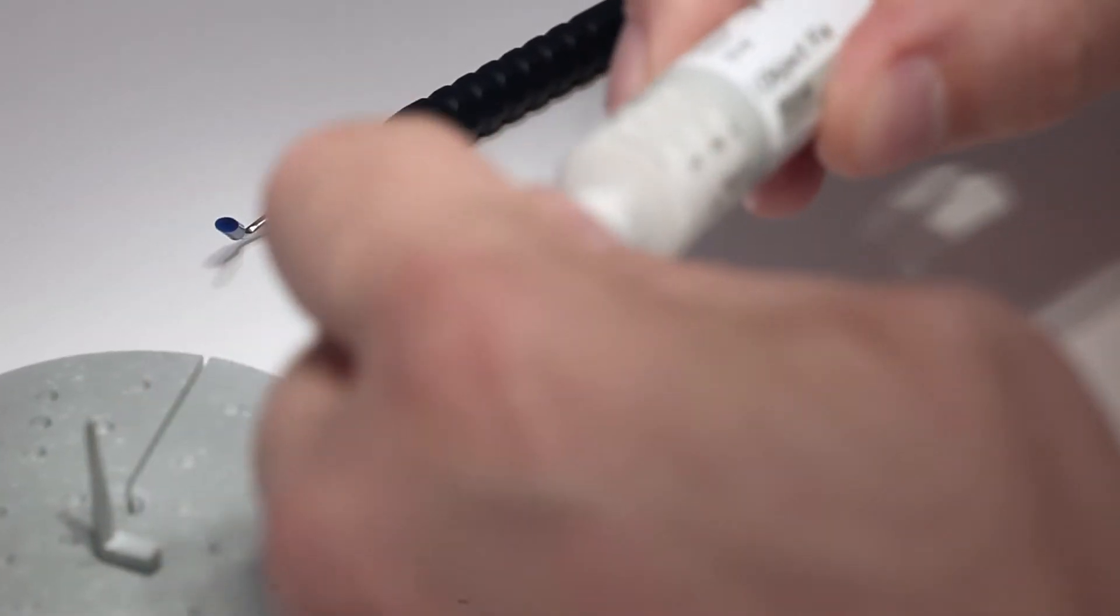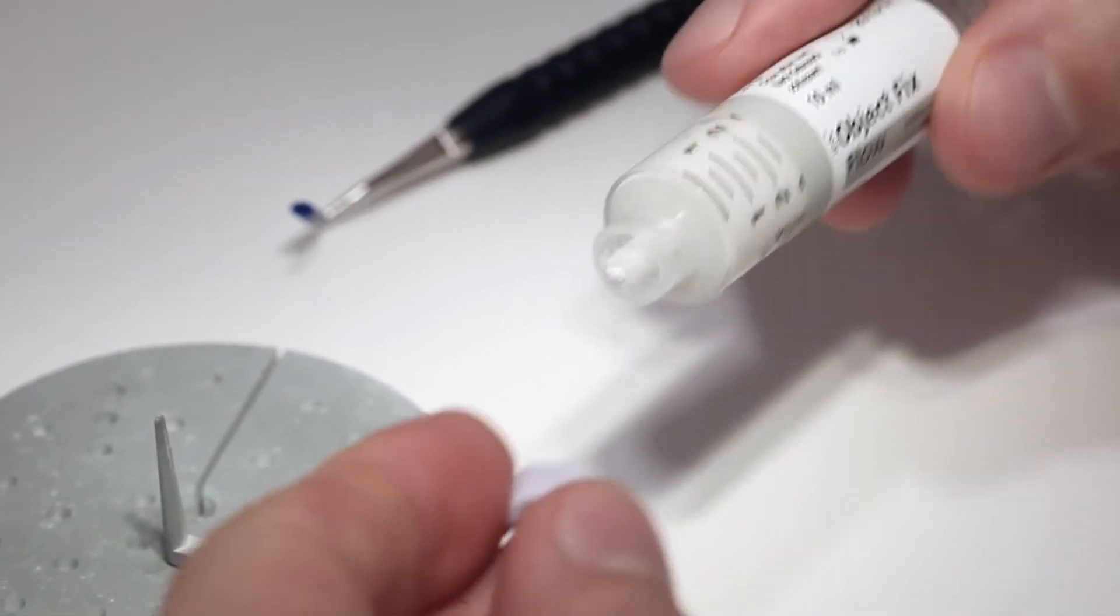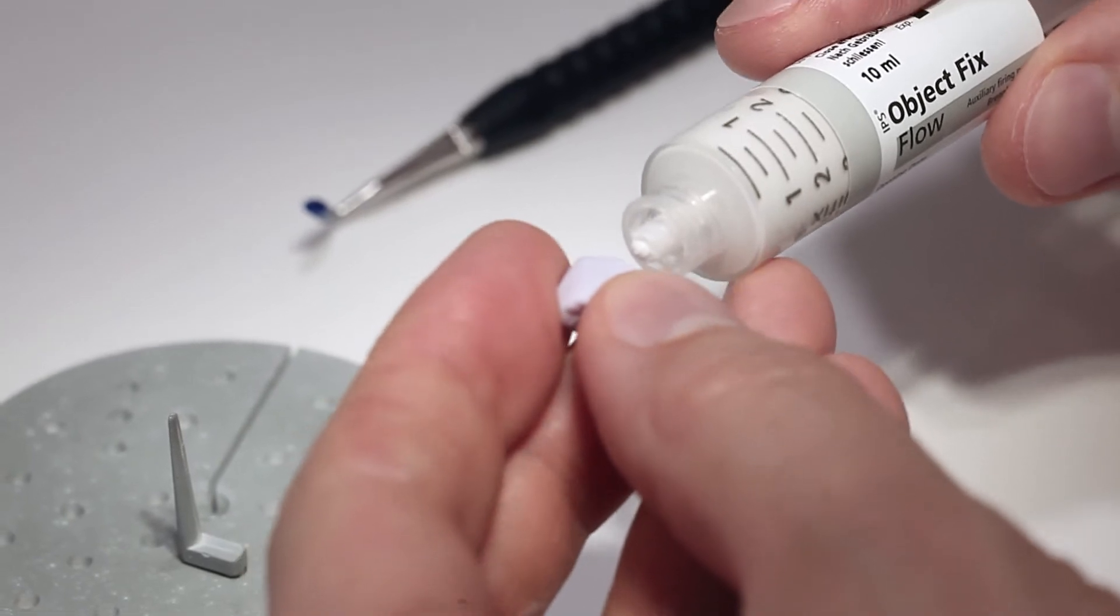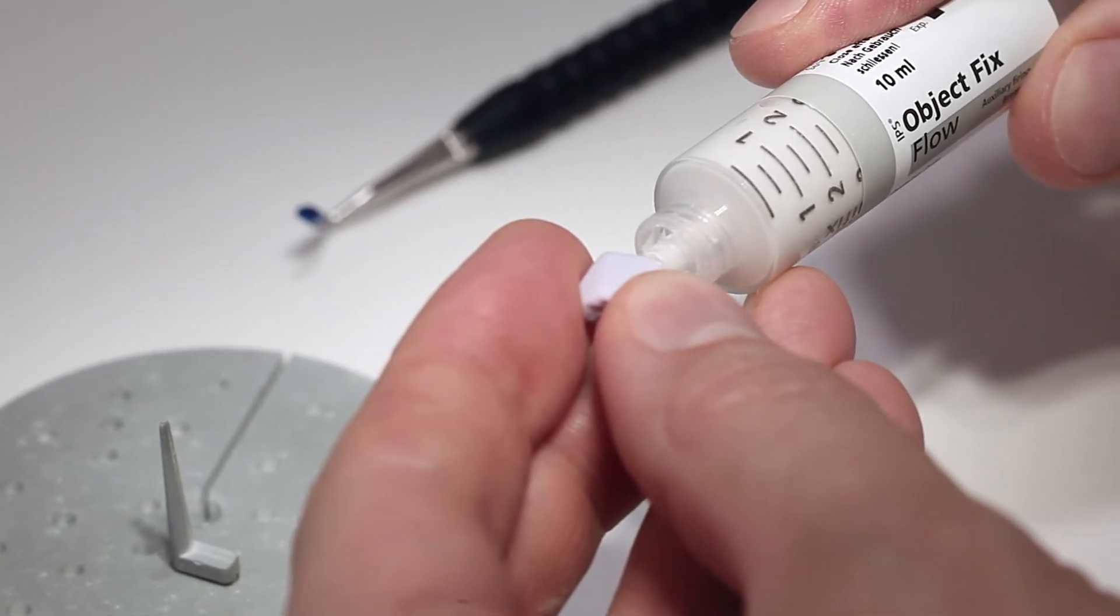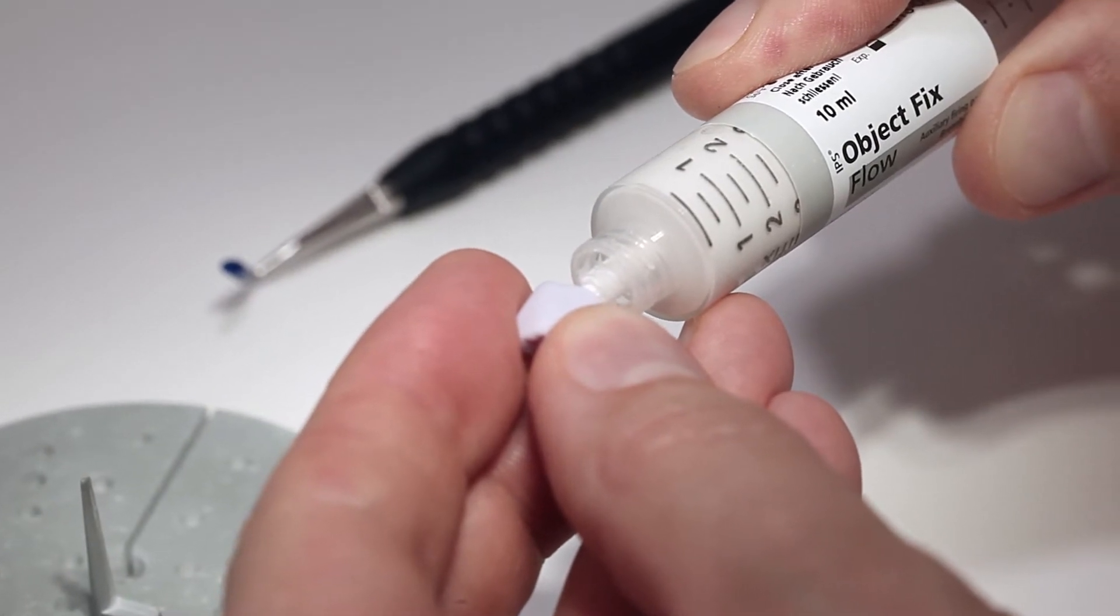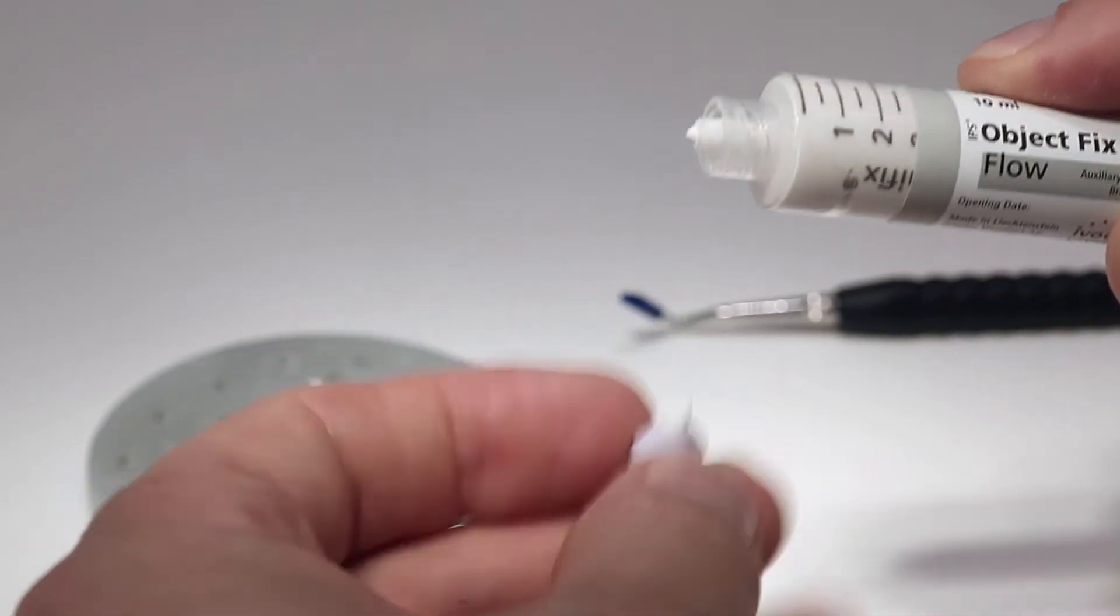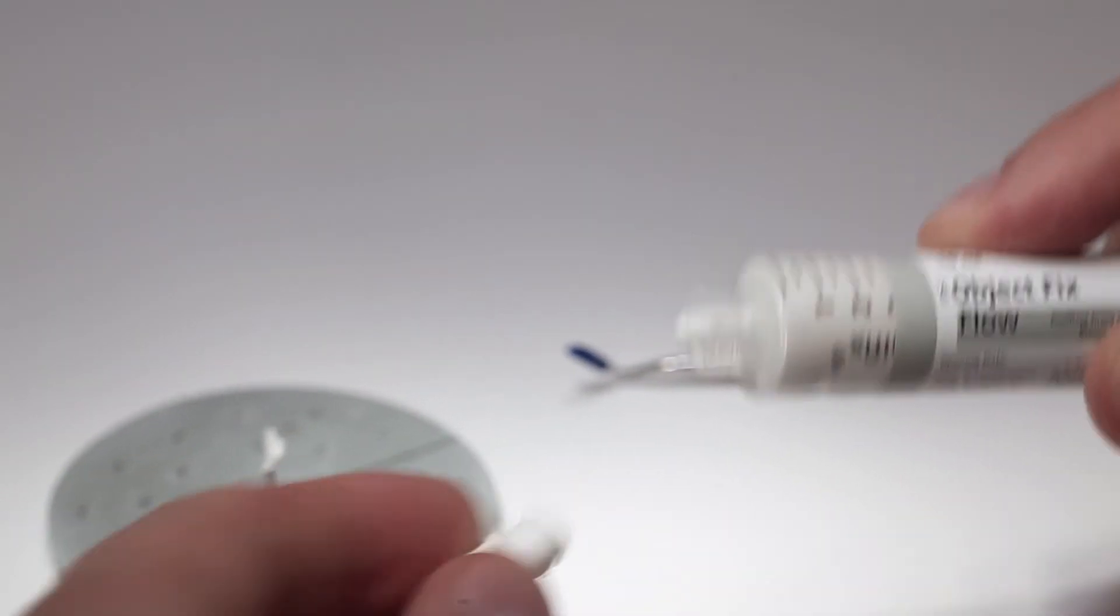In preparation for the crystallization process, seat the ceramic structure on an IPS eMAX CAD crystallization pin excess. Begin the seating process by filling the interface of the IPS eMAX CAD ceramic structure with either IPS object fix putty or flow. Seal the syringe immediately after removing the material to prevent it from drying out.